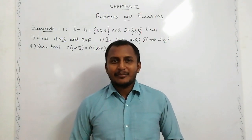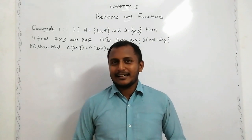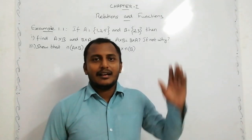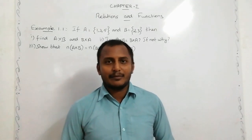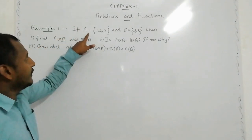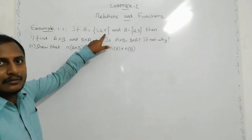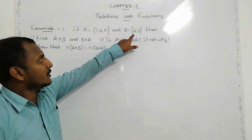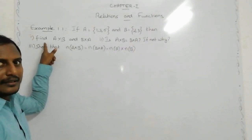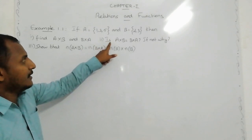Hello students, welcome to SMS EasyMax channel. Now, 10th standard Chapter 1: Relations and Functions. The first example, part one: if A equals the set {1, 3, 5} and B equals the set {2, 3}, then first part — find A cross B and B cross A.